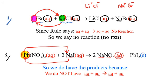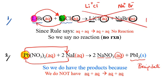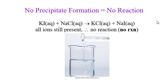We have aqueous and solid on the product side, so we do have this reaction and we call it a precipitation reaction, because we made this insoluble solid — we call that a precipitate. For the first example, because we had both aqueous products, we call that no reaction. The reason is they are all soluble in water, so we are not able to identify which one is which — both are aqueous, so we cannot say we have a reaction.